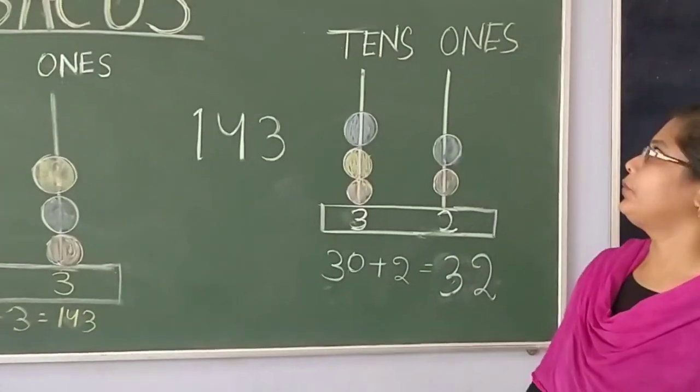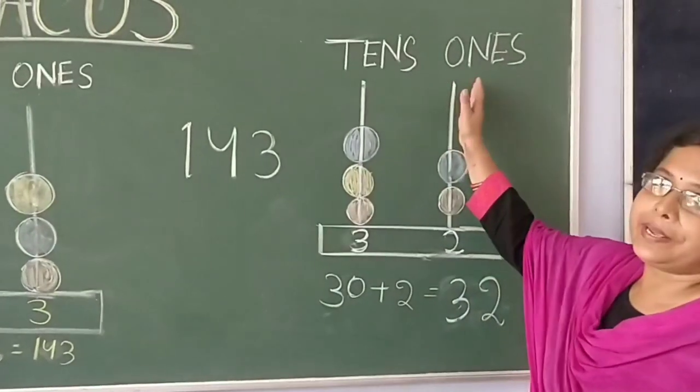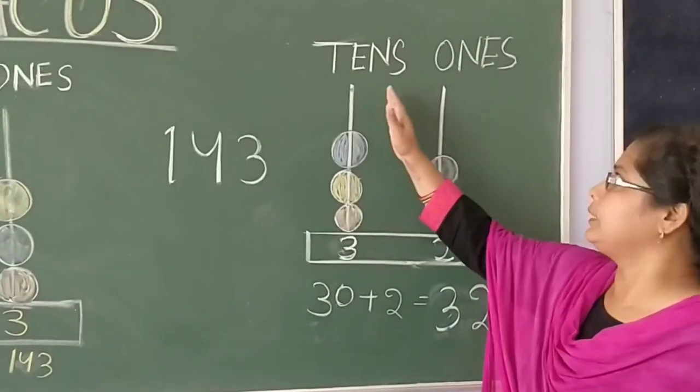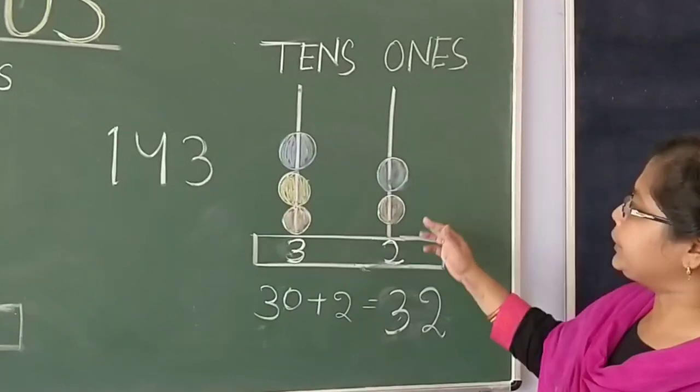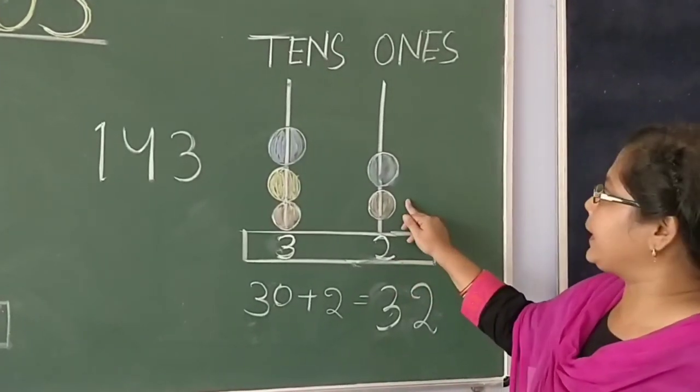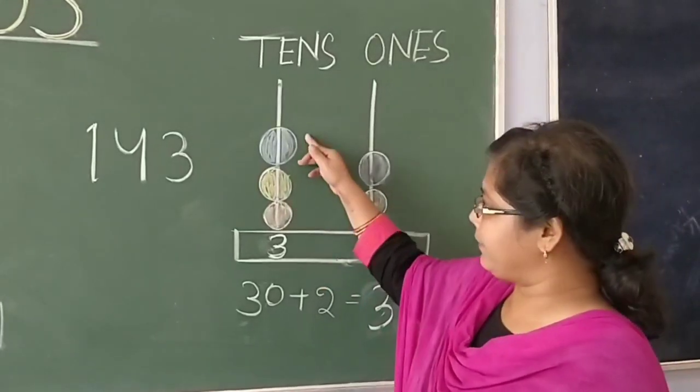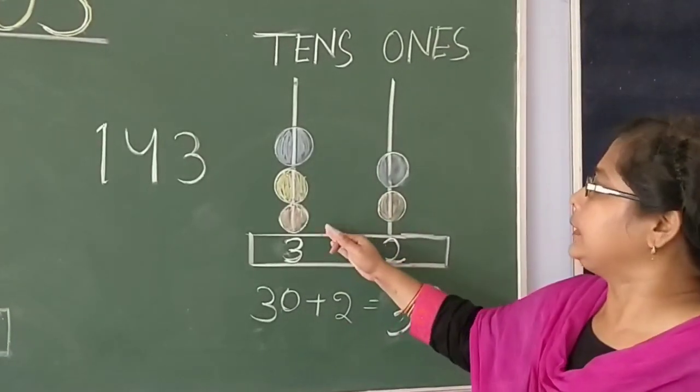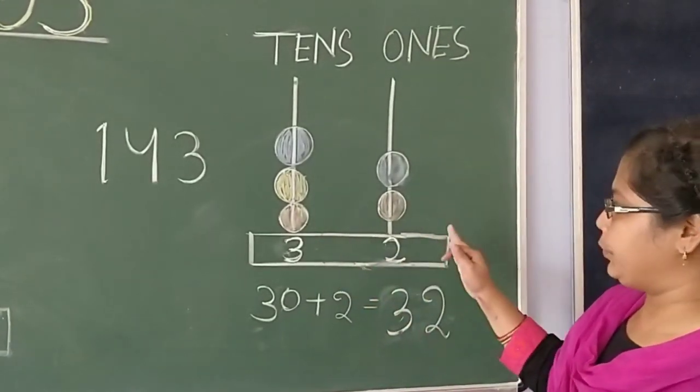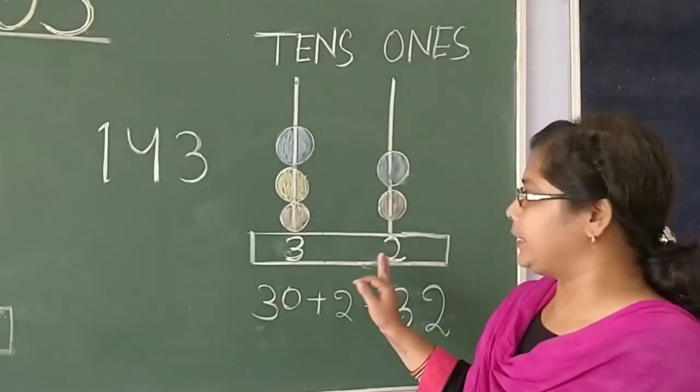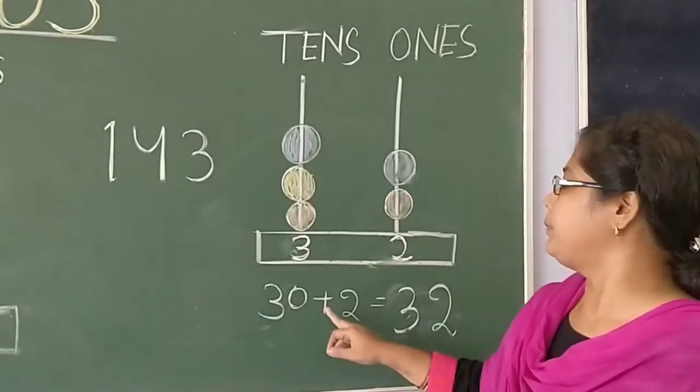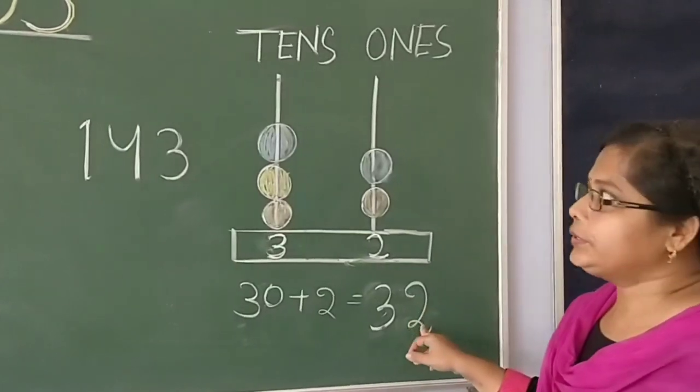In class 1, we already done ones place and tens place. Ones place is here, I have written 2. 2 means I have to take 2 bits. And 3 means I have done here 3 bits. 3 tens and 2 ones equal to 32. So, 30 plus 2 equal to 32.